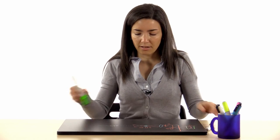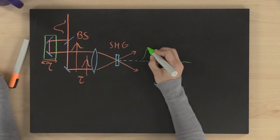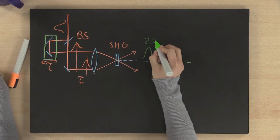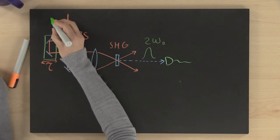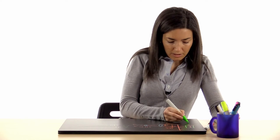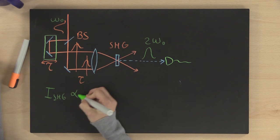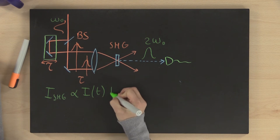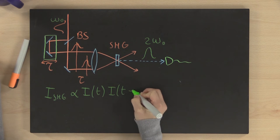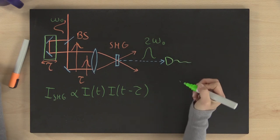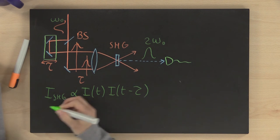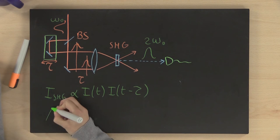The SHG crystal produces a signal which is at twice the frequency of the main pulse. The intensity of the produced signal is proportional to the product of the intensities of the two pulses. The signal, which is measured by a detector, is our autocorrelation signal.